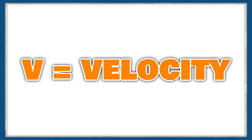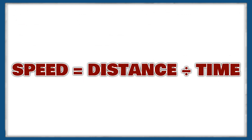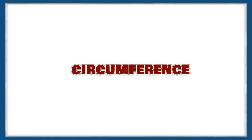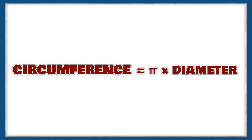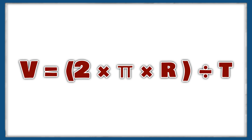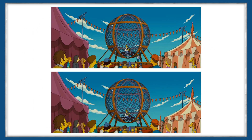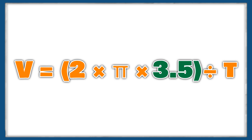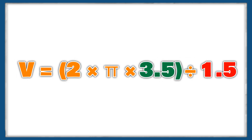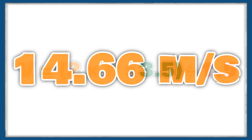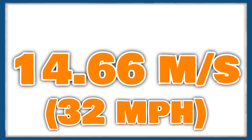For velocity, we can use the equation speed equals distance divided by time, adapted for circular motion using the circle's circumference as the distance. Circumference equals 2 pi times the radius, giving us the equation: velocity equals 2 times pi times the radius of the sphere divided by the time taken to get around it. We already know the radius is 3.5 meters, and using 2 times the time taken for Homer to travel halfway around the ball — giving a time of 1.5 seconds — we get a circular velocity of 14.66 meters per second, or roughly 32 miles per hour.